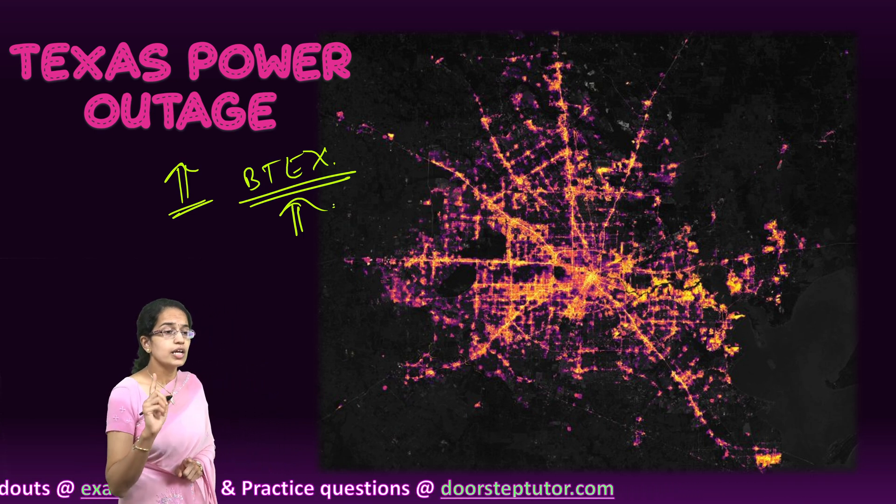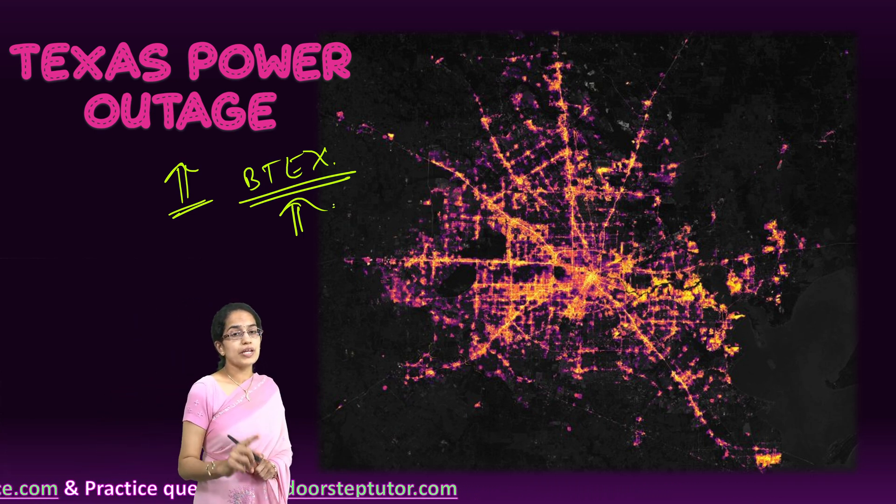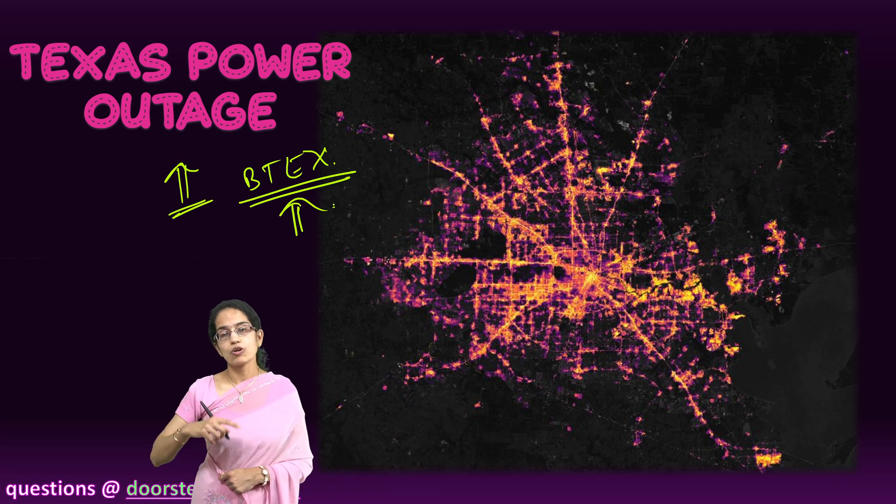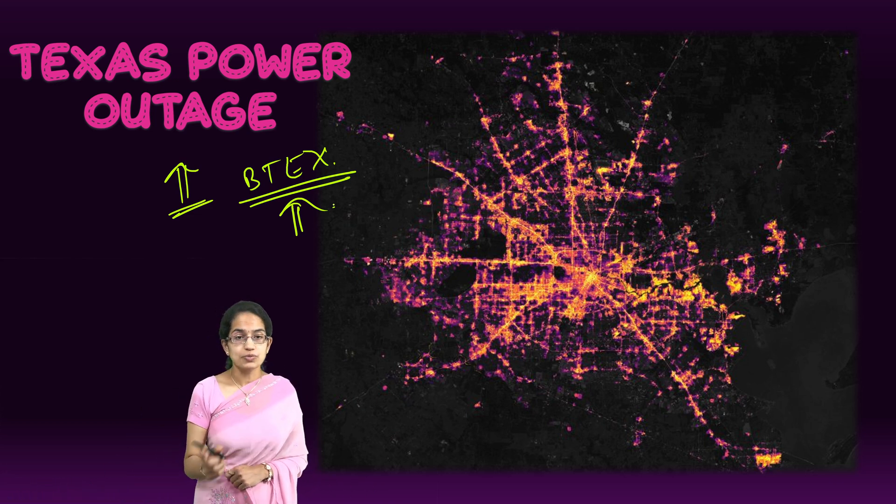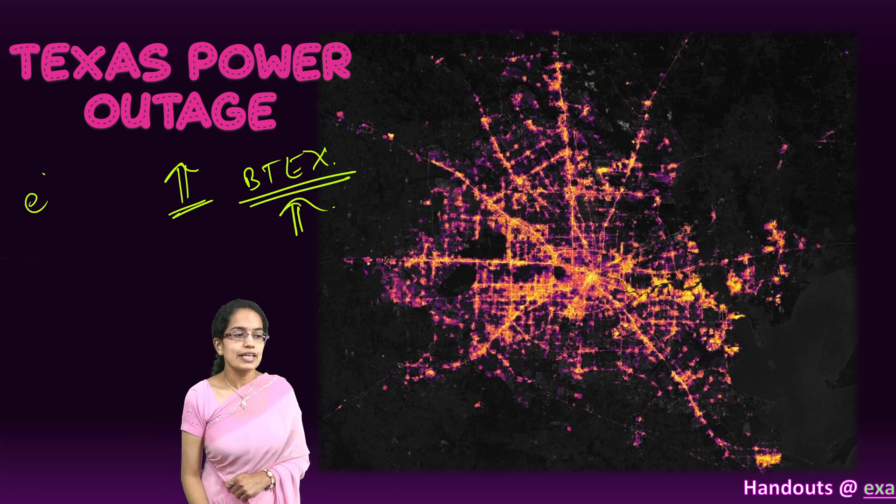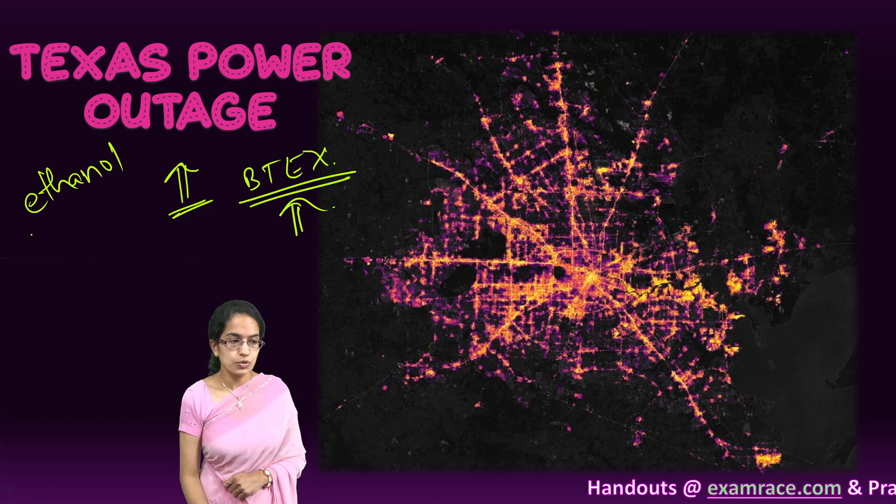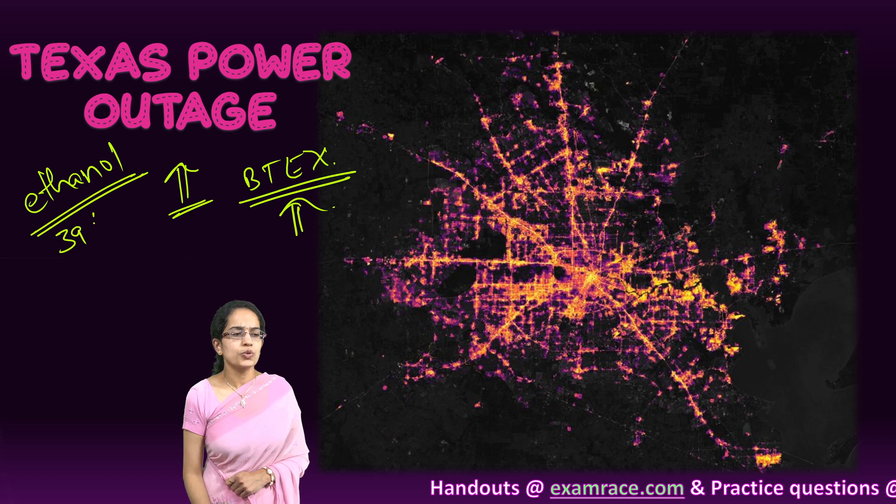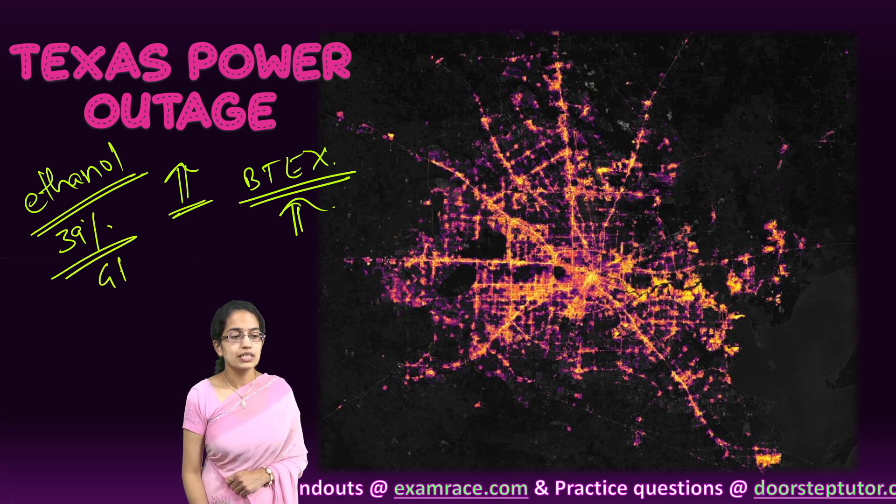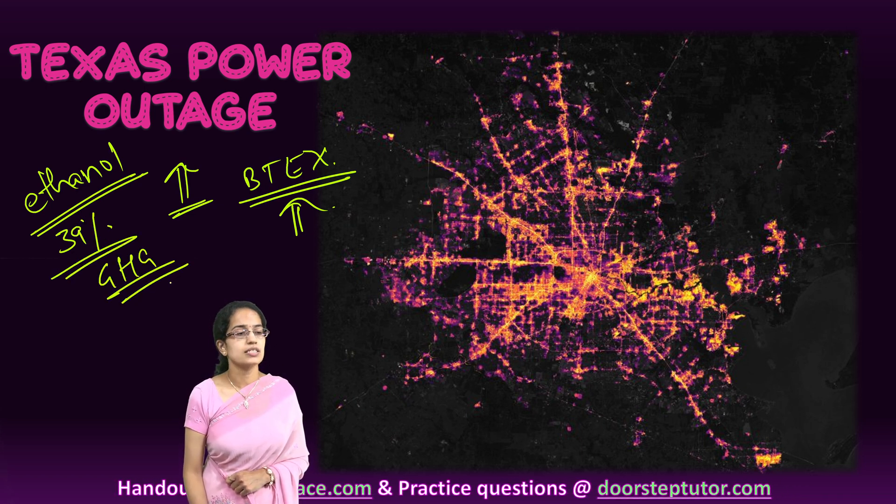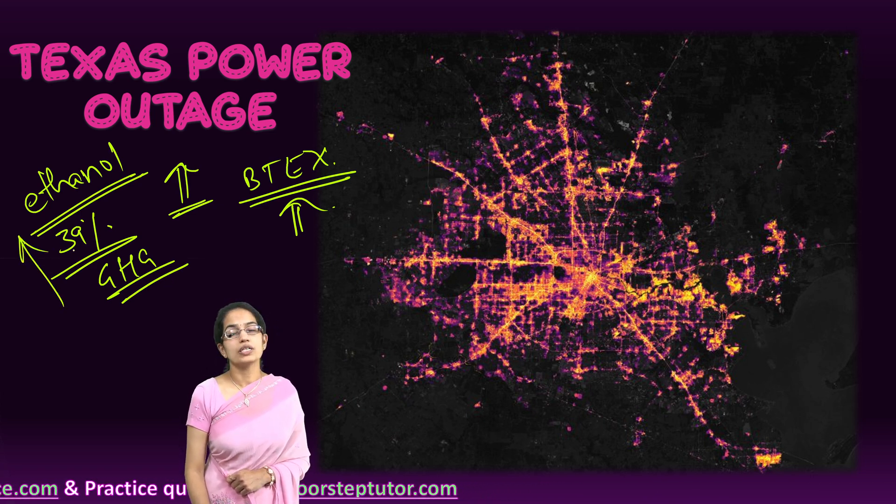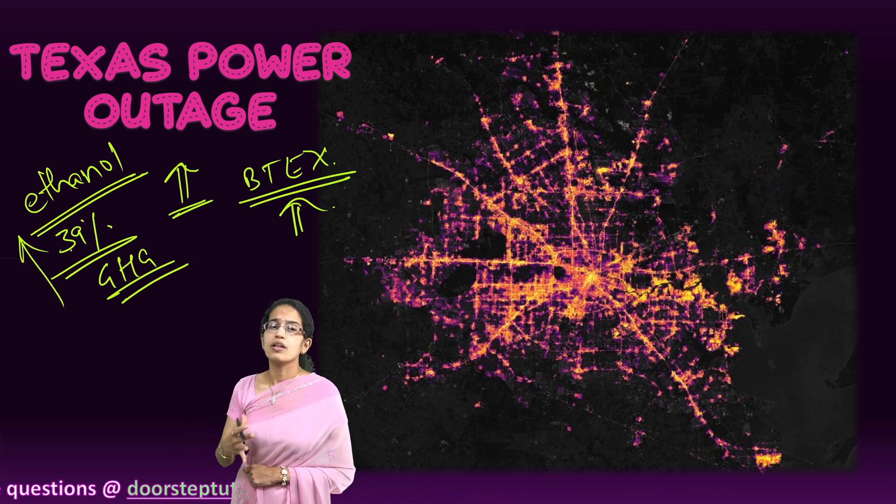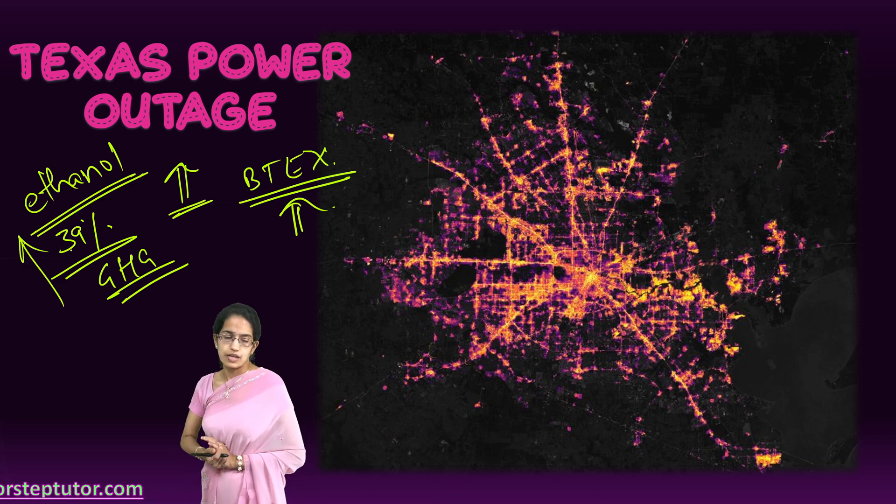Therefore, it is very important to take into account that there is an alternative cleaner, greener fuel substitute that has to be brought, and ethanol is considered a good match for it. Ethanol usually has nearly 39% less greenhouse gas emissions as compared to the petroleum products. And therefore, we are now focusing on blended ethanol, biodiesel technology that we are focusing on.